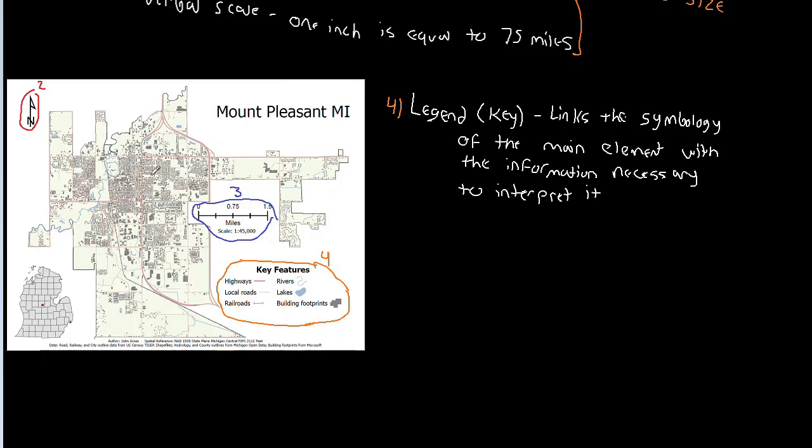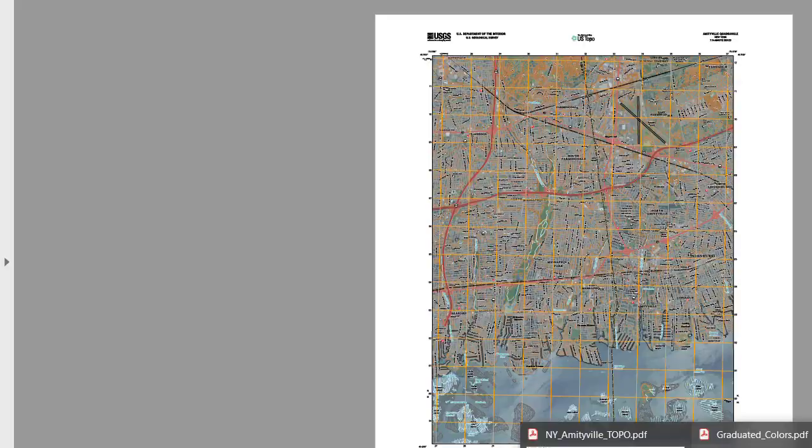So for example, in our example here right, our key features or our legend is telling us that any element with these sort of pale red lines here, these are representing highways. The thinner sort of orangish lines are representing local roads. Lines that have the hash marks are representing railroads. So you might on the one hand be saying hey, in this case most of the stuff in the legend is mildly obvious, but it's still important to have. And I want to show you another example, we're gonna go back to the demographics example that we looked at for thematic maps.